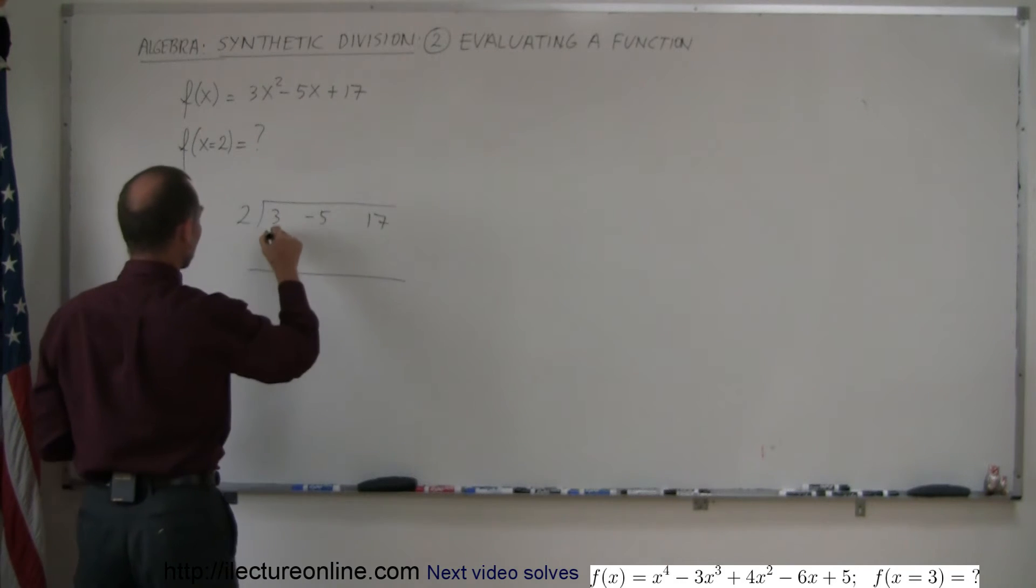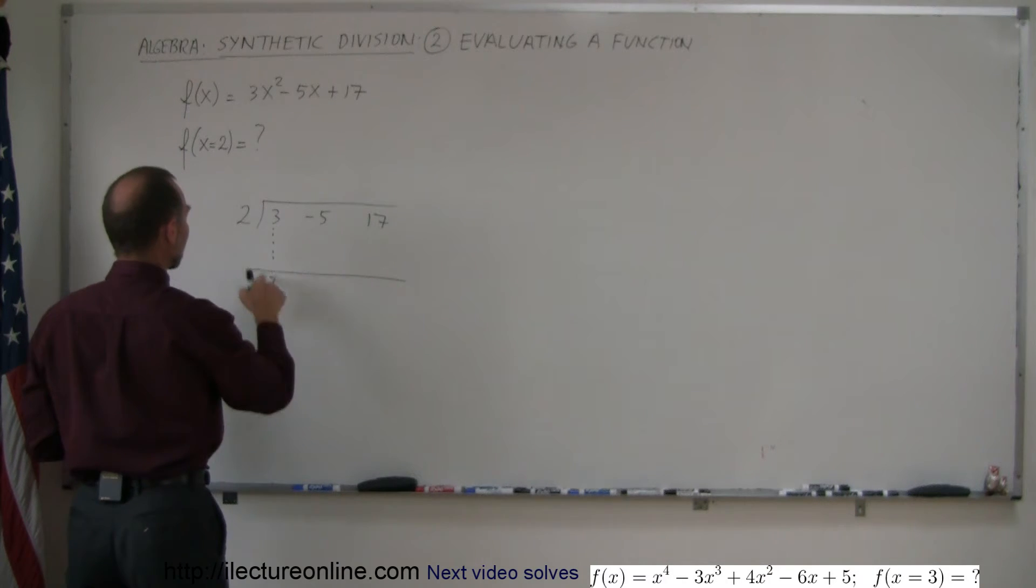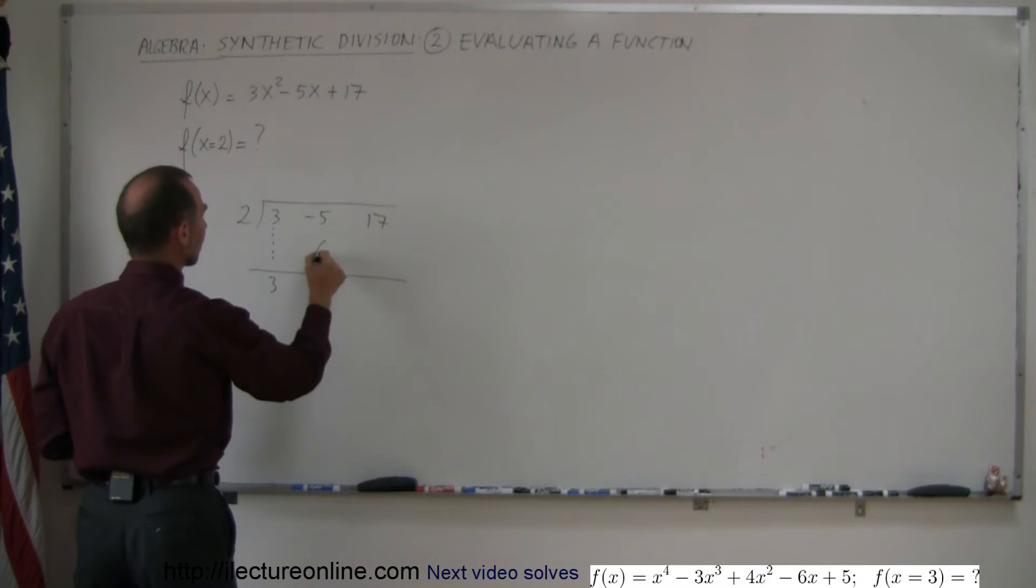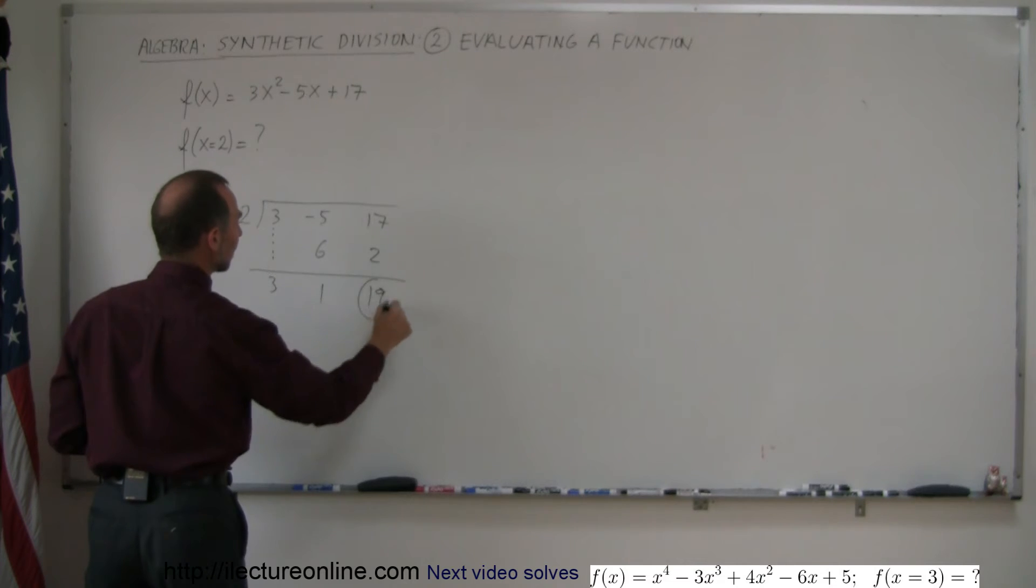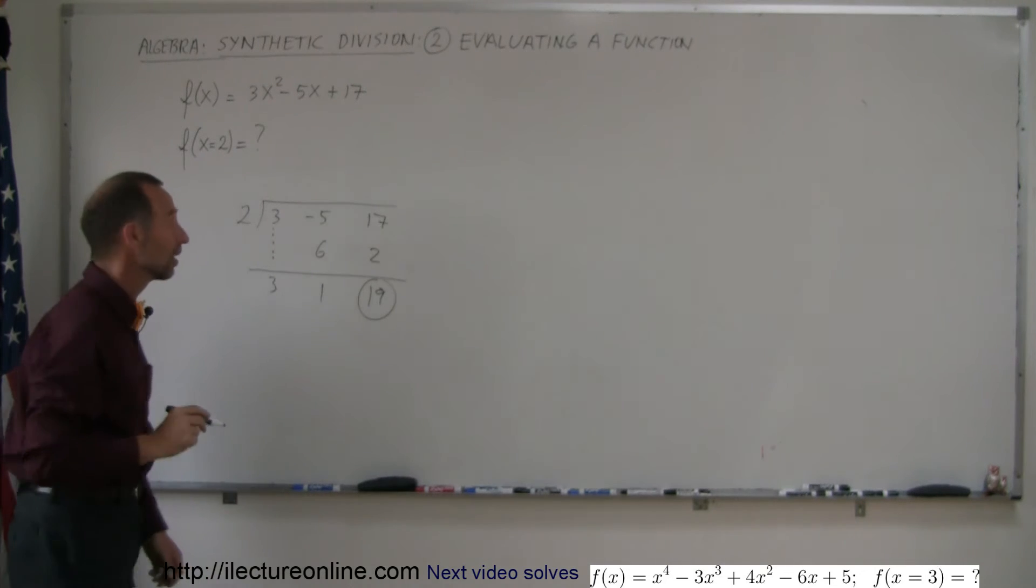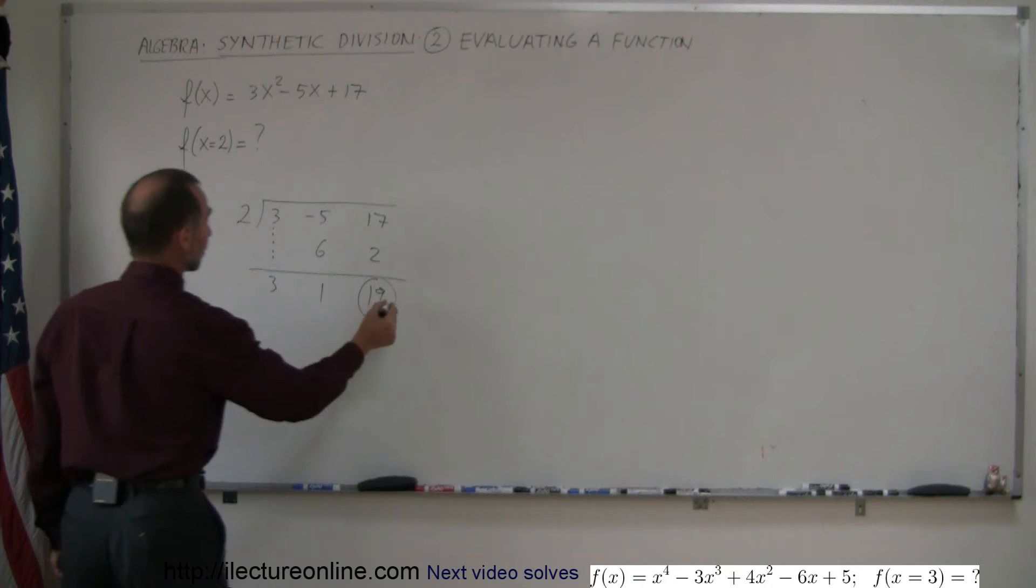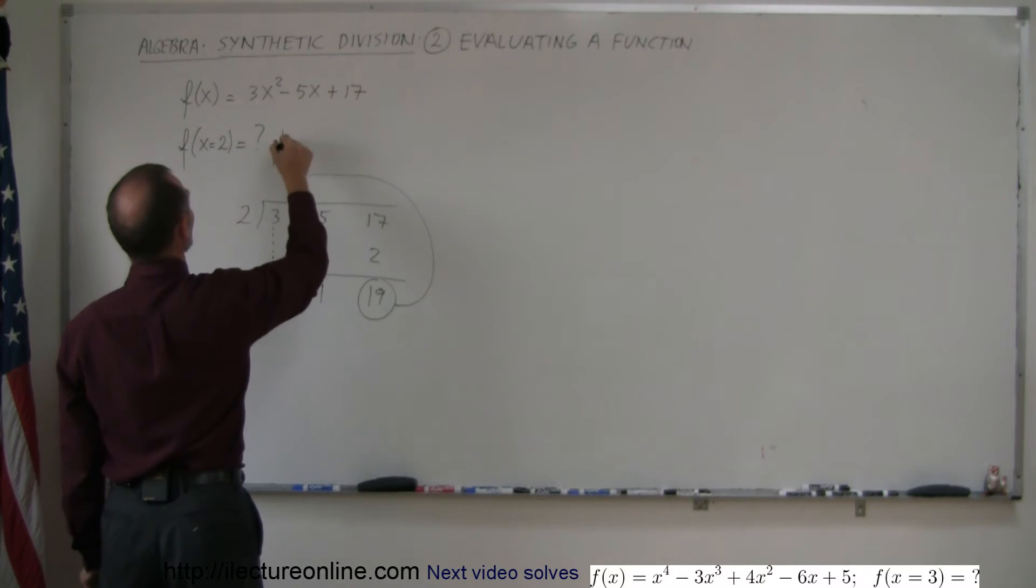So you put a line here, drop the 3 down, 3 times 2 is 6, add it over here. Add these two together, you get 1. 1 times 2 is 2, add those together you get 19. And this is what f(x) equals when x equals 2. It is equal to 19.